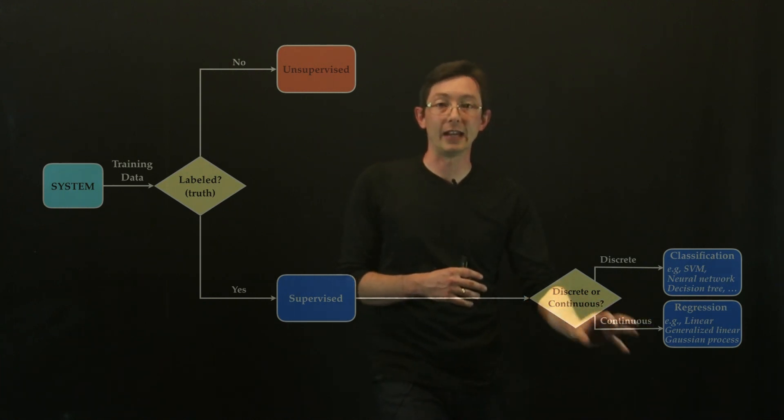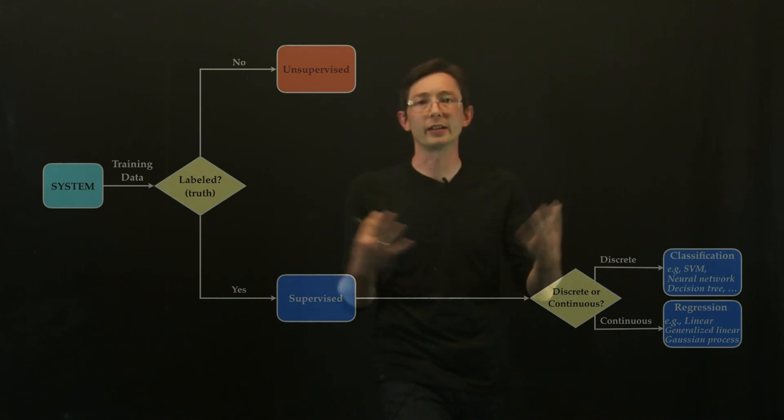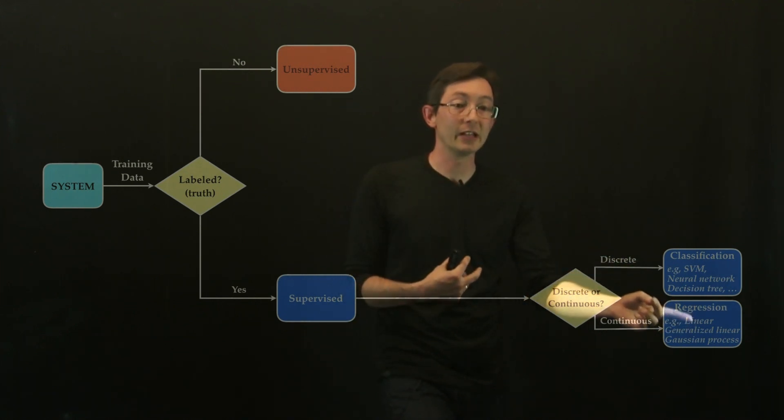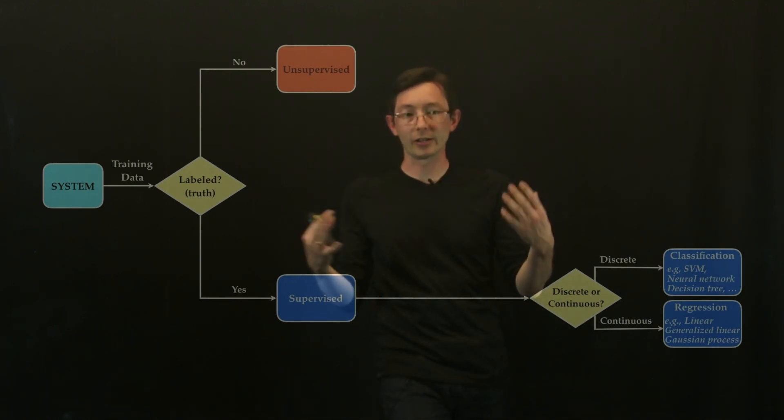If you have this continuous data, then you're going to build a regression model. And these are the kind of models we're very familiar with in linear regression, Gaussian processes, logistic regression, things like that.